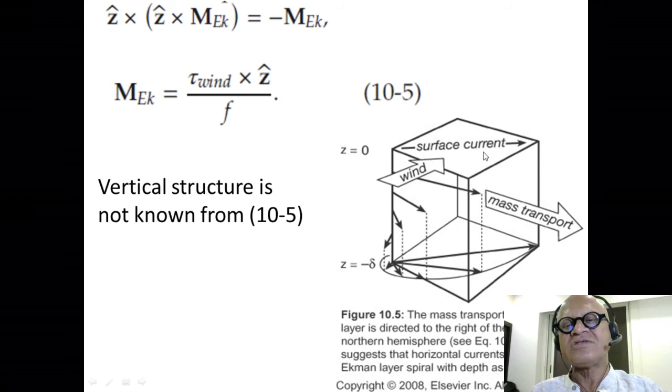That current drags the surface, so it's tilted to the right of this current because of Coriolis again. Frictionally, this current drags the layer below, but obviously it gets weaker because friction makes the energy dissipate.